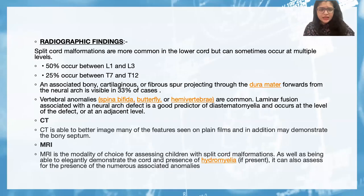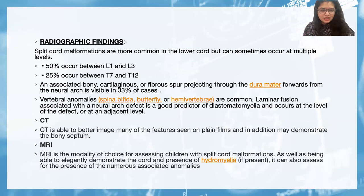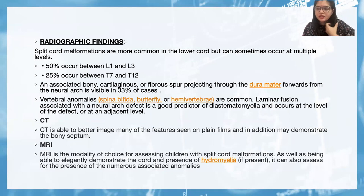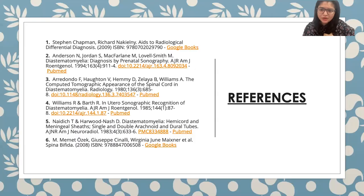Radiographically, spinal cord malformations are more commonly located between L1 and L3 in 50 percent of cases, and between T7 and T12 in 25 percent. Spina bifida, butterfly, or hemi vertebrae may also be present. CT is able to better image many bony features, but MRI is the modality of choice for assessing children with split cord malformations, elegantly demonstrating the cord, hydromyelia, and numerous associated abnormalities. Thank you.